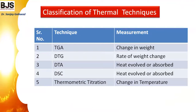This method is classified into different thermal techniques. The first is TGA — thermogravimetric analysis — where we measure the change in weight as a function of temperature. From that we can plot a thermogram, and from that data we can calculate the derivative, enabling both qualitative and quantitative analysis.